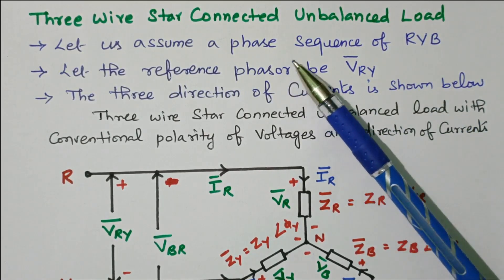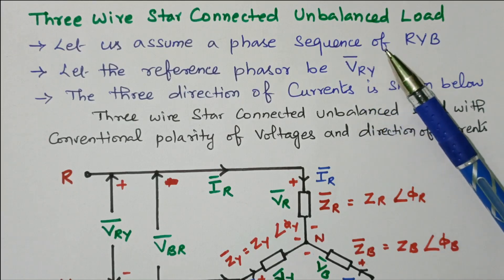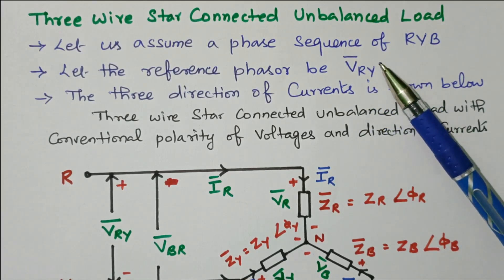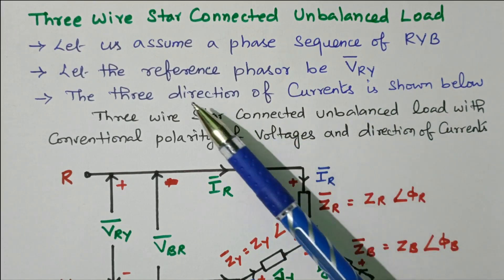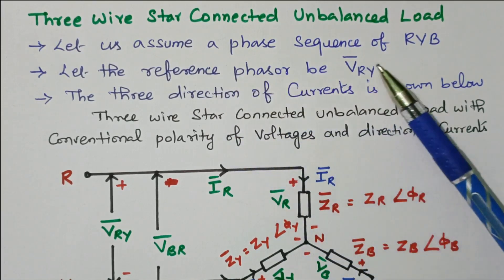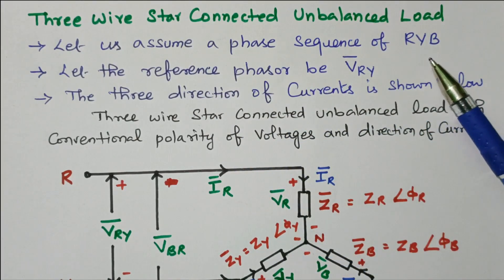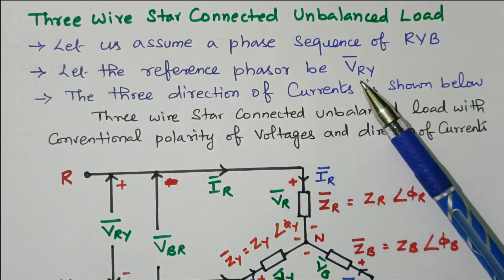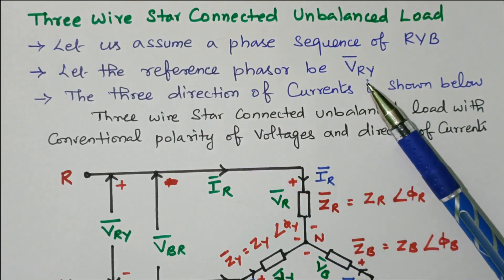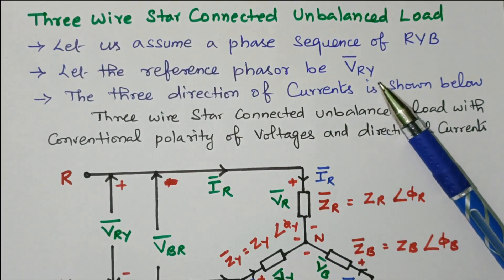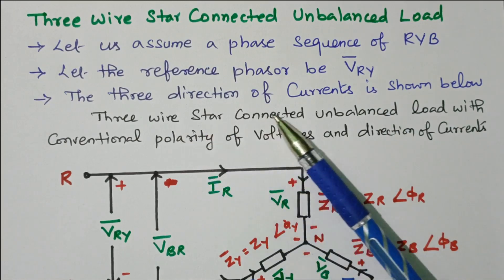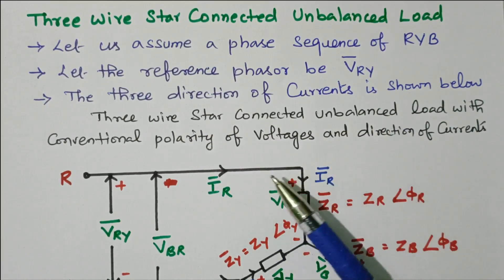3-phase star connected with the unbalanced load. The balanced load video is available separately; this is the unbalanced load. So let us assume a phase sequence of RYB — red, yellow, blue. Then the reference phase voltage will be VRY, the voltage between R-phase and Y-phase is taken as a reference phasor. The direction of current is shown in the diagram.